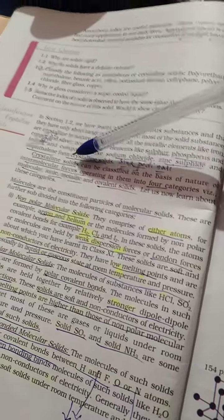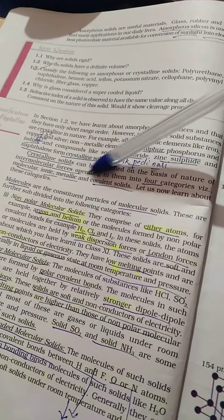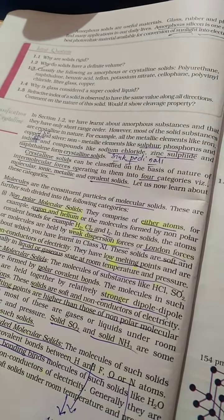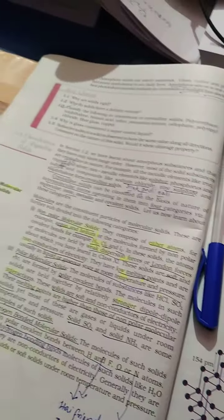For crystal solids, crystal solids are classified based on the nature of intermolecular forces operating in them into four categories: molecular, ionic, metallic, and covalent solids. Let's now learn about these categories.